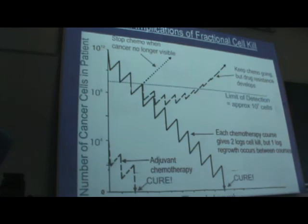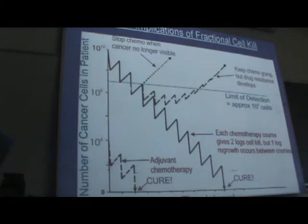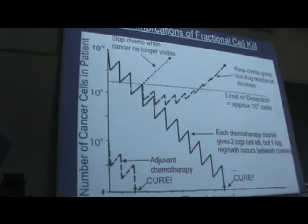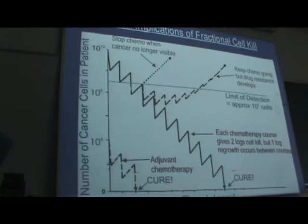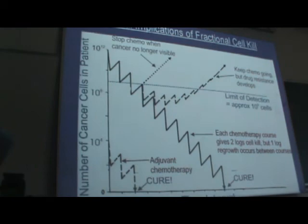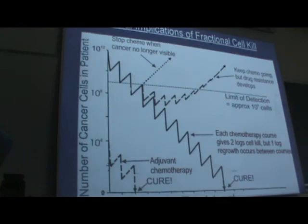In contrast, for micrometastatic disease — a small tumor assumed to be present in the lung or liver, perhaps 10^3 or 1000 cells — chemotherapy has a rapid and effective impact because the tumor burden is small and all cells are actively growing, making them susceptible to chemotherapy. However, after finishing chemotherapy for bulky disease, dormant resistant cells may eventually reappear.